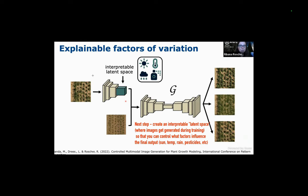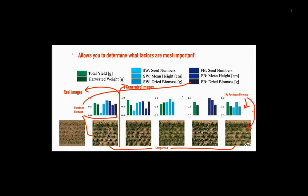In machine learning there's this training space called the latent space, and what the researchers were trying to do is create an interpretable latent space where they could actually control what factors influence the final output image. If these were the factors — sun, temperature, rain, pesticide use — they could manipulate the mix of those variables in the generated image and say, okay, if we knock out the sun and use a bunch of pesticides, what will happen? This allows you to determine what factors are most important in creating healthy crops or ideal outputs in the harvest.